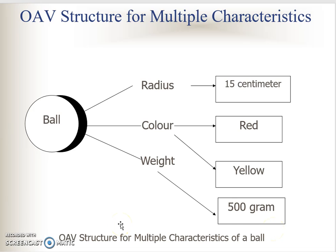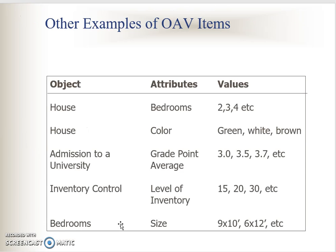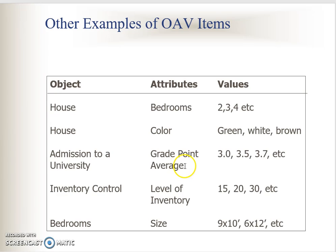Now, how do we translate this into a table? Here is another example of OAV. We have a list of objects. Object 'house' has two attributes: bedroom and colour. Bedrooms can have many values — one house can have 2, 3, or 4 bedrooms. Similarly for colour: green, white, or brown. We also see examples like admissions to university with grade points, and inventory control, each with their own attributes and values.